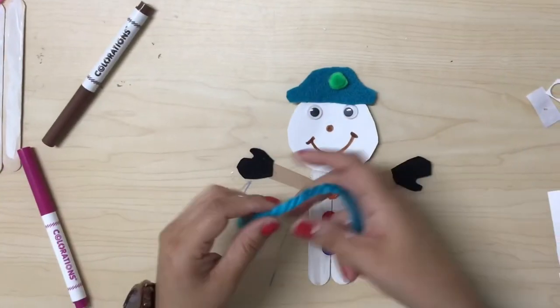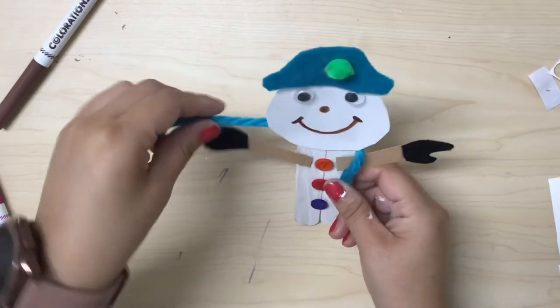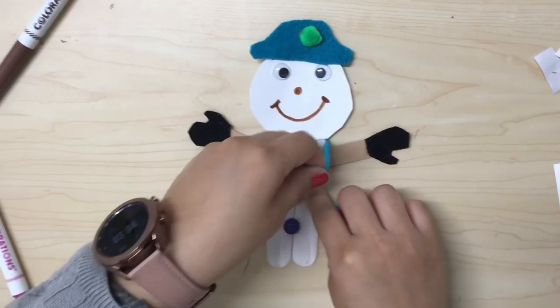Next step, take your yarn and put it around the neck of your snowman. It will be a scarf and make a knot.